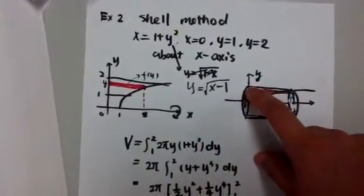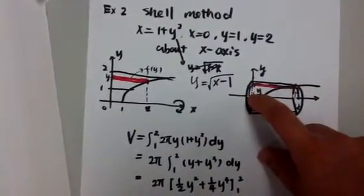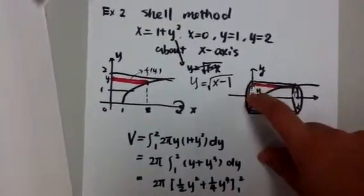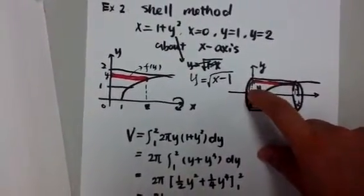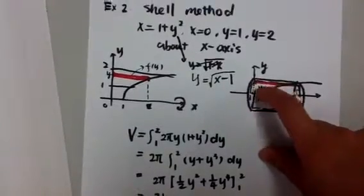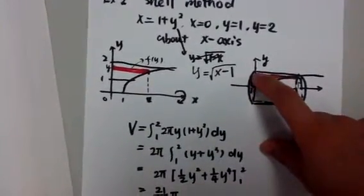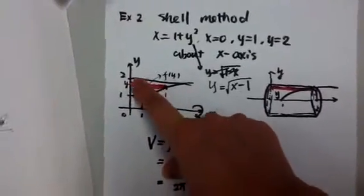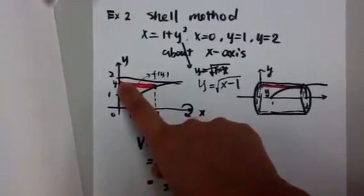And the radius is from here to there. This is the center of the circle, right? So the radius will be y value. Okay, from here to there is just y value. Because here, this is some generic rectangle. So from 0 to there, just y.